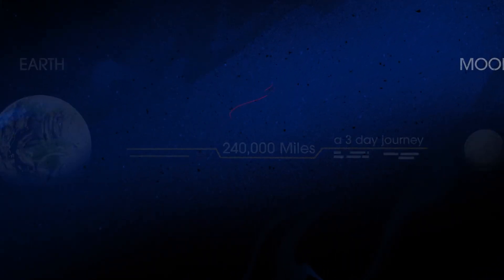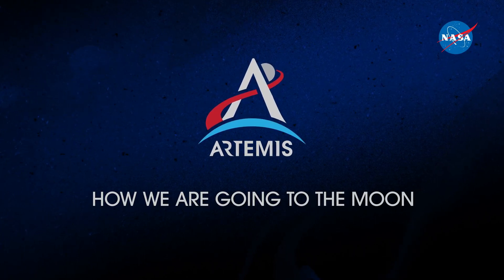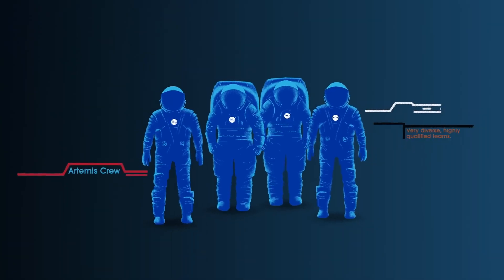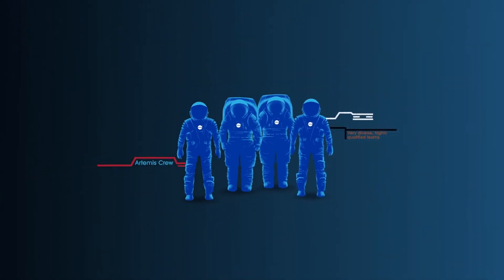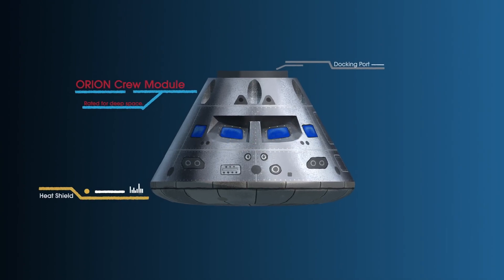So, what will an Artemis mission look like? Everything is designed and tested with our most important element in mind, the astronauts. This is their deep-space, human-rated spacecraft called Orion, built in three parts.